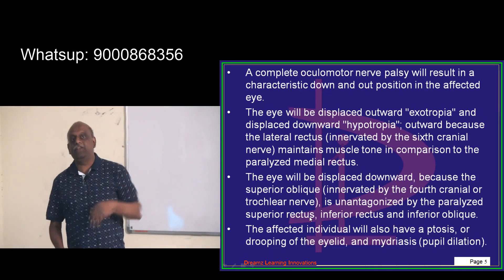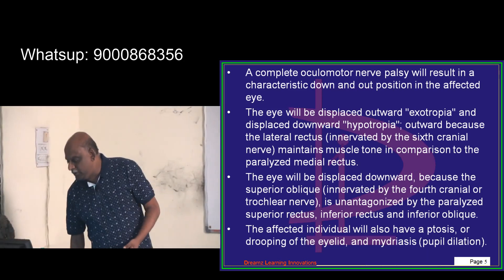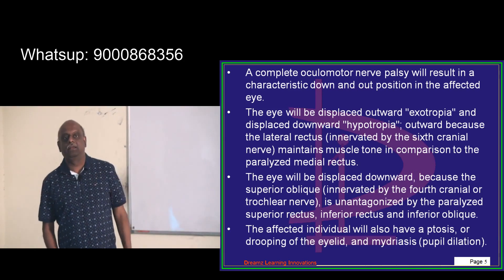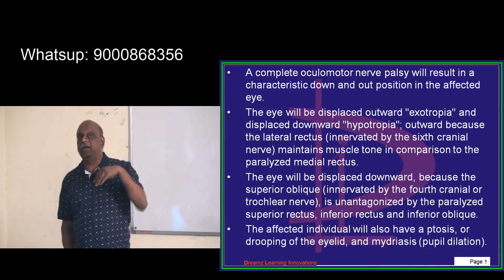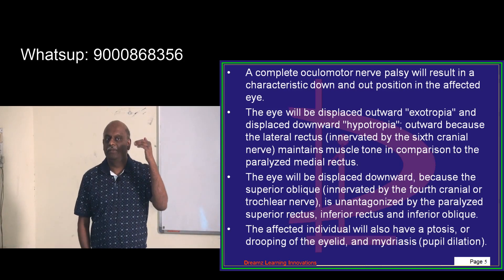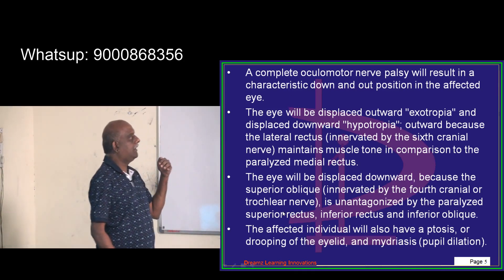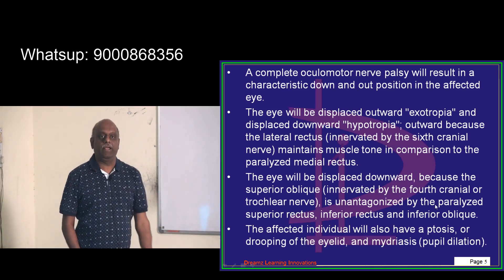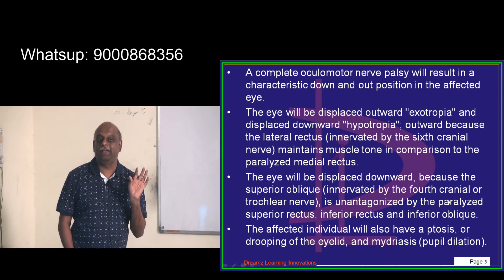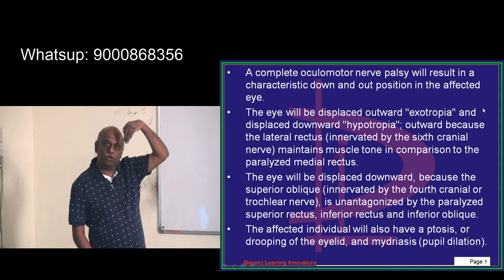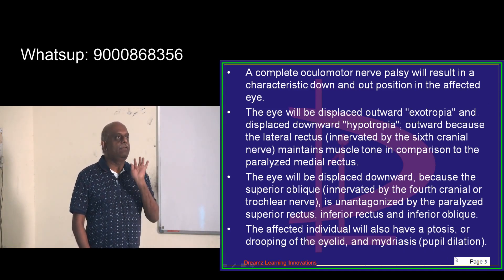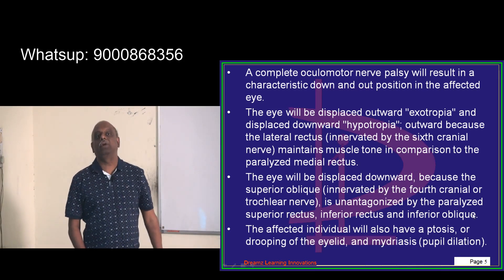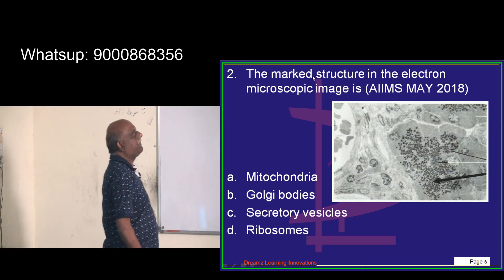The eye will be displaced downward in oculomotor palsy because the superior oblique, innervated by the trochlear nerve, is unantagonized when the oculomotor nerve is paralyzed. The superior oblique pushes the eye down and with no oculomotor nerve to oppose it, the eye goes into a downward and outward position — 'out and down' is what you need to remember.